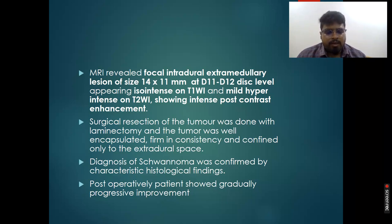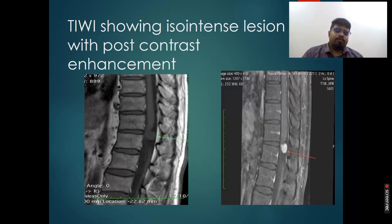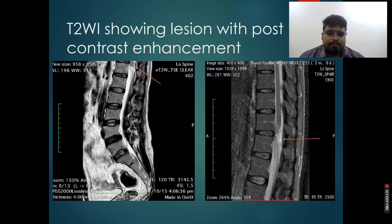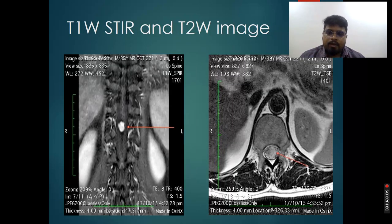Diagnosis of schwannoma was made mainly by characteristic histological findings. Post-operatively, the patient showed gradual progressive improvement. The T1-weighted images show the lesion as isointense with post-contrast enhancement, and on T2-weighted images it appears mildly hyperintense with post-contrast enhancement.